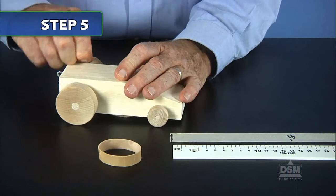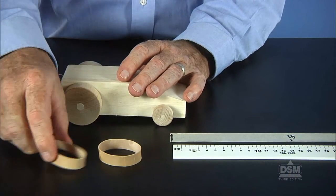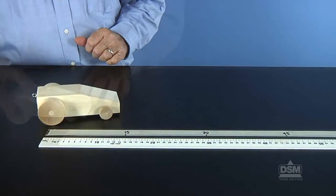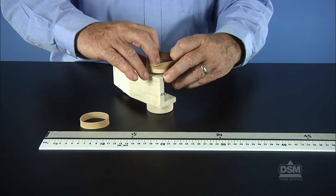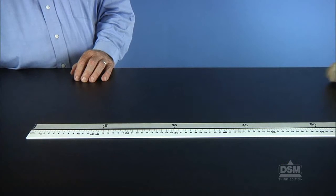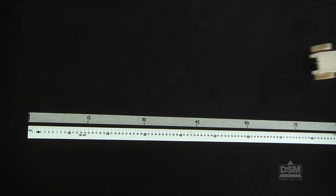Tell students to remove the rubber bands from the rear wheels and conduct three trials to determine how far the tractors will travel. Then, have them replace the rubber bands and conduct three more trials. Have them record their results on Activity Sheet Six.